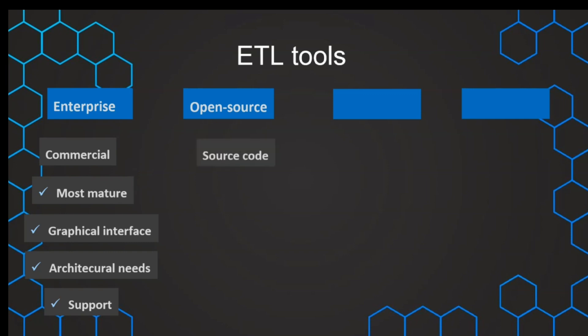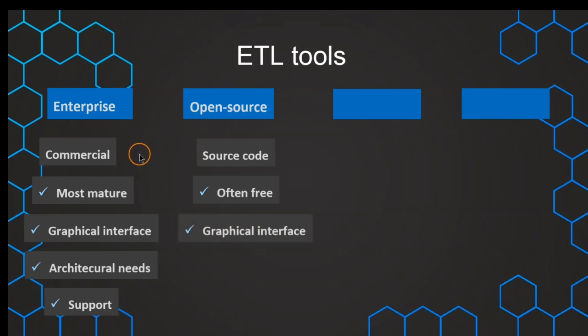We also have open source solutions, which make the code publicly accessible. This helps to understand exactly how the tool works and gives additional trust that the source code is available — so everyone knows and understands how it works and whether there are any security issues. Open source does not necessarily mean that it's free, but oftentimes those open source solutions are indeed free. Also, enterprise tools can have open source solutions and can make their code publicly available, and they can also offer free versions.